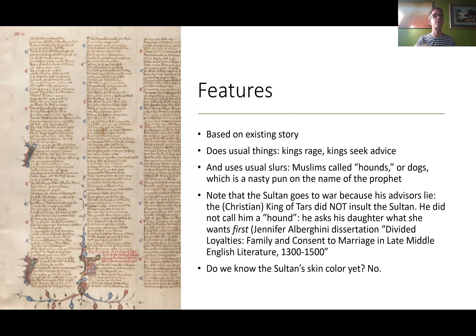For more on this, you'll want to look at how consent is working in this text. There's an entire dissertation on the topic by Jennifer Alboghini at the Graduate Center called 'Divided Loyalties: Family and Consent to Marriage in Middle English Literature, 1300–1500.' Like most dissertations, it's available on ProQuest — you can just read it and get access to cutting-edge research in medieval and other fields.